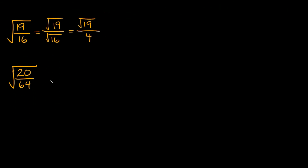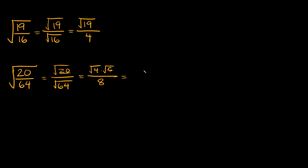Here we have the square root of 20 over 64. We break it up into the square root of 20 over the square root of 64. For 20, we choose 4 times 5 over 2 times 10 because 4 is a perfect square — giving us the square root of 4 times the square root of 5 in the numerator. The square root of 64 in the denominator equals 8. The square root of 4 equals 2, so the numerator simplifies to 2 times the square root of 5 over 8. Reducing 2 over 8 to 1 over 4, the final answer is the square root of 5 over 4.